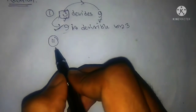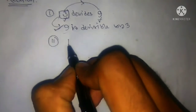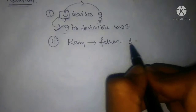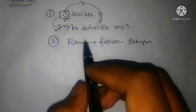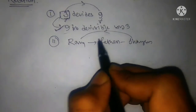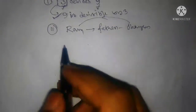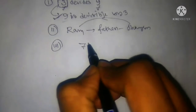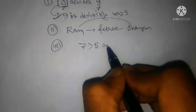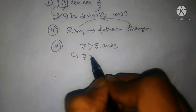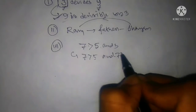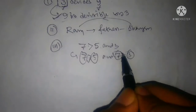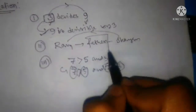Another example of a relation: Ram is the father of Sam. Here also there is a relation between Ram and Sam. Another example: seven is greater than five, and seven is greater than three. So the relation between five and seven, and between three and seven, is 'greater than'.